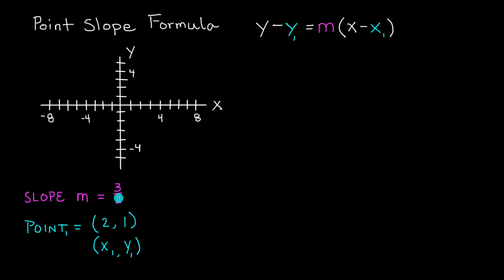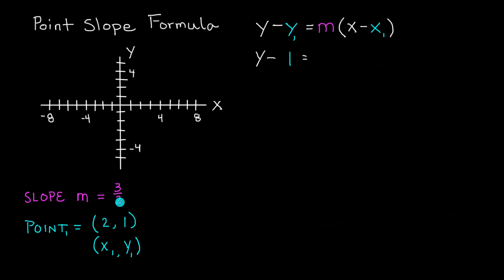To find the equation of the line that has a slope of 3 over 2 and has the point (2, 1) on it, we simply plug this information into the point-slope formula and solve it so that we can get the line in slope-intercept form. Starting with the formula: y minus y1 equals m times (x minus x1). In the y1 position we have the number 1, and our slope m is 3 over 2.